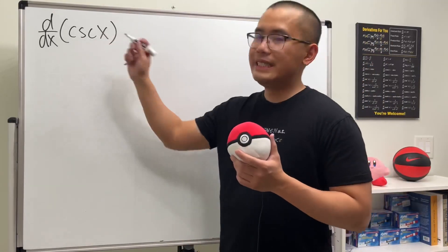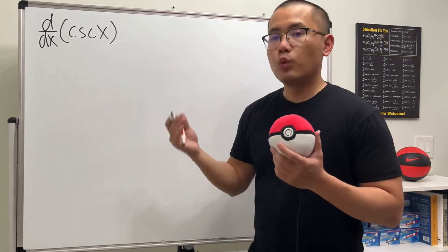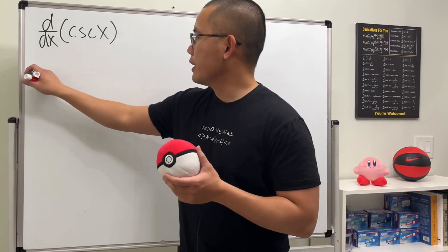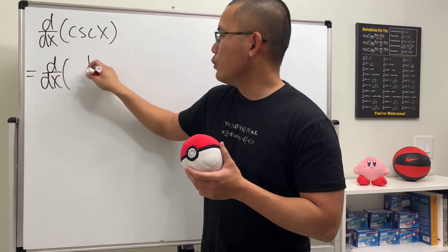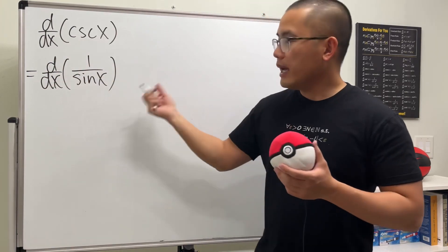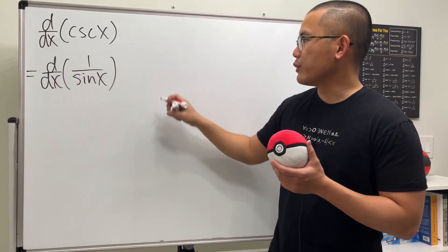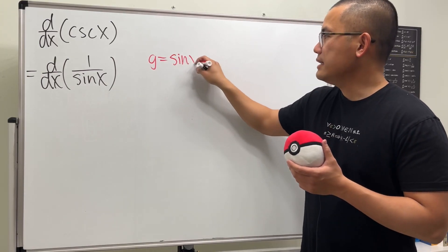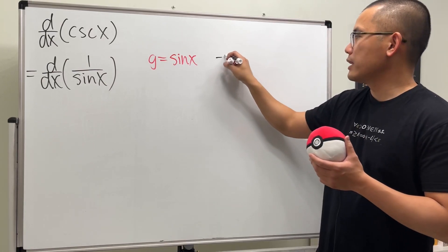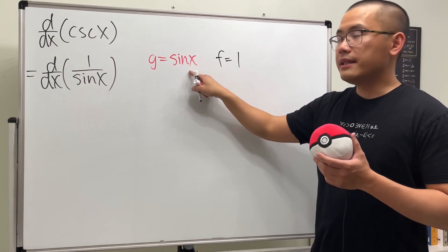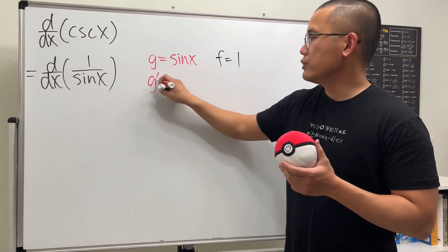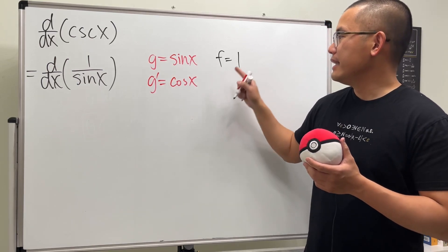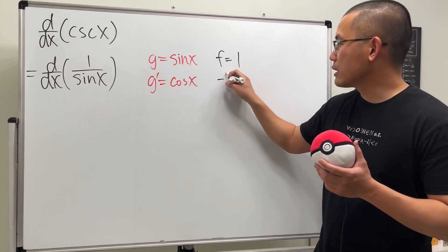Let's figure out the derivative of cosecant x. To do this, we can first write this as 1 over sine x, because we know the derivative of sine x already. To take the derivative of 1 over sine x, we can use the quotient rule. I'm going to write down the bottom function, which is sine x, and then the top function is 1. The derivative of sine x will give us cosine x, and the derivative of 1 is 0.